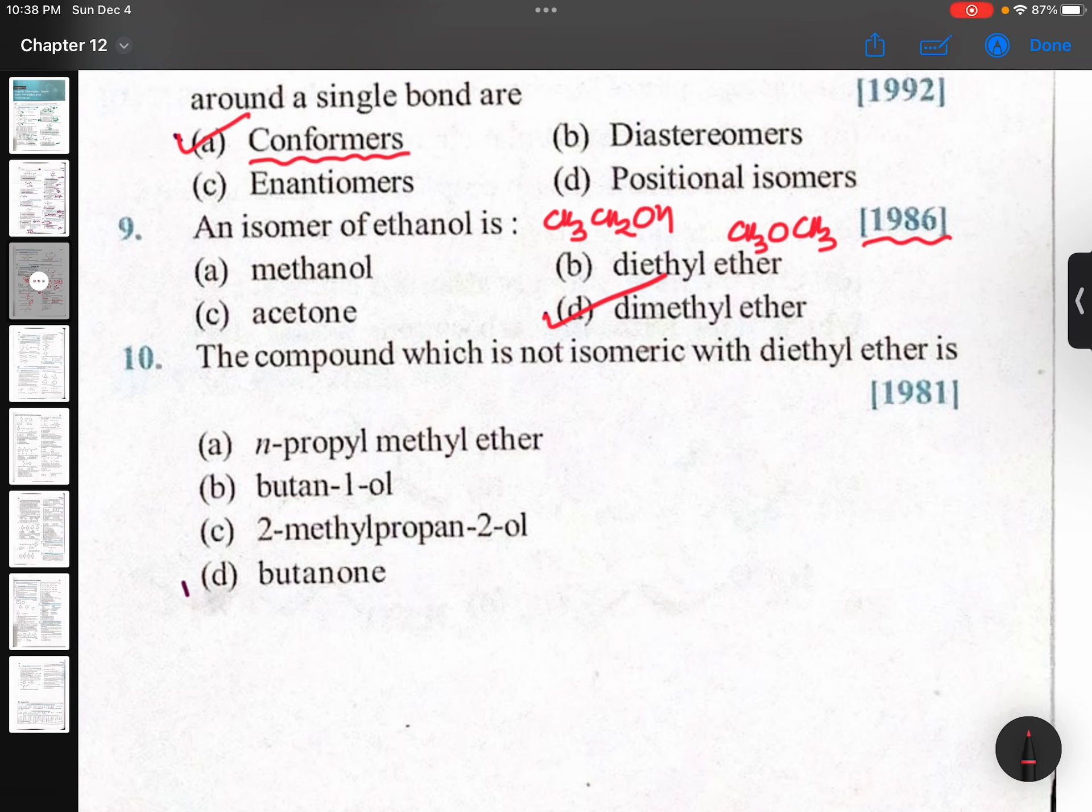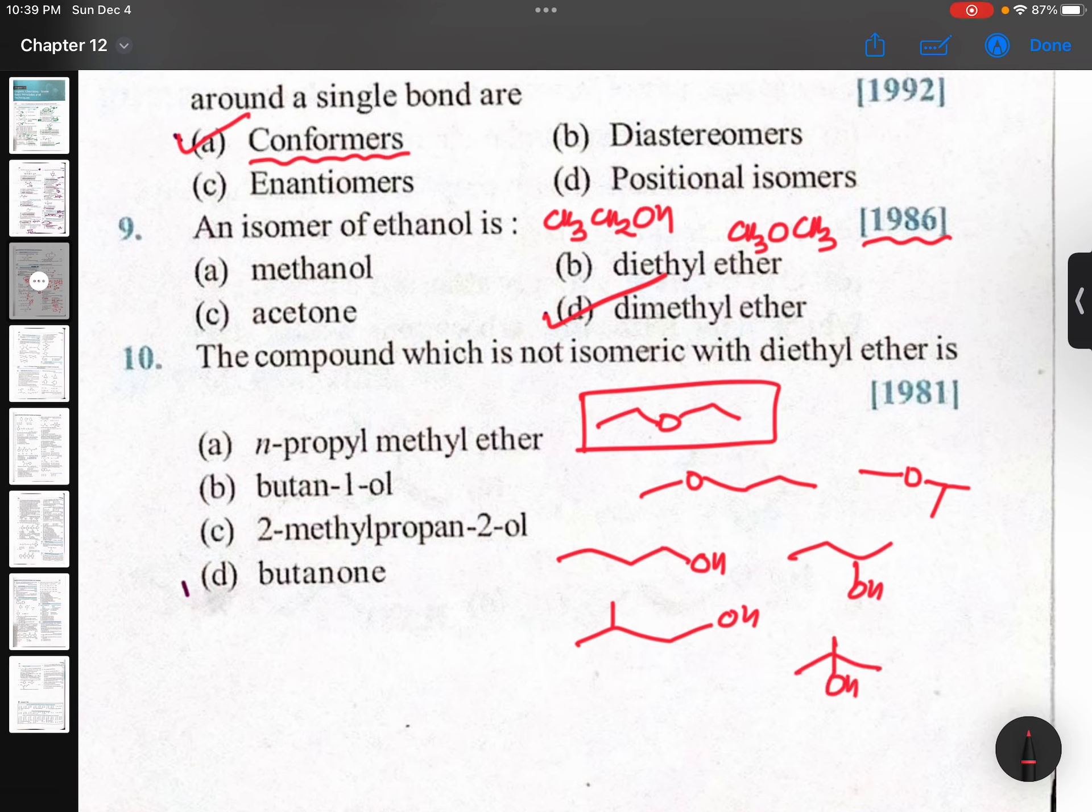The compound which is not isomeric with diethyl ether is... diethyl ether is this one. It has seven forms totally. This three are ethers: 1-butanol, 2-butanol, 2-methyl-1-propanol, 2-methyl-2-propanol. So butanone cannot be.